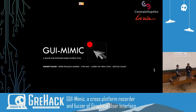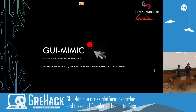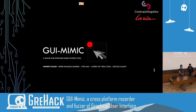Vincent Rollin is on stage, part of the CIDRE team who developed a tool for program and malware analysis. The talk is called GUI Mimic, a cross-platform recorder and fuzzer of graphical user interfaces.